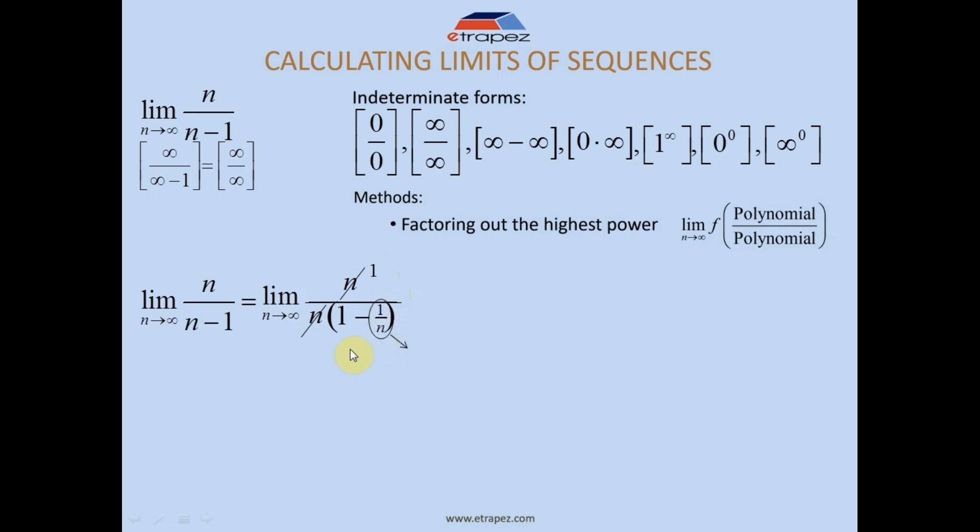What does 1 over n approach? We remember that it approaches infinity, so here we really have 1 over infinity. 1 over infinity from these two basic formulas that I showed you on the previous slide. This is 0, so I know that this approaches 0, this I can replace with 0.